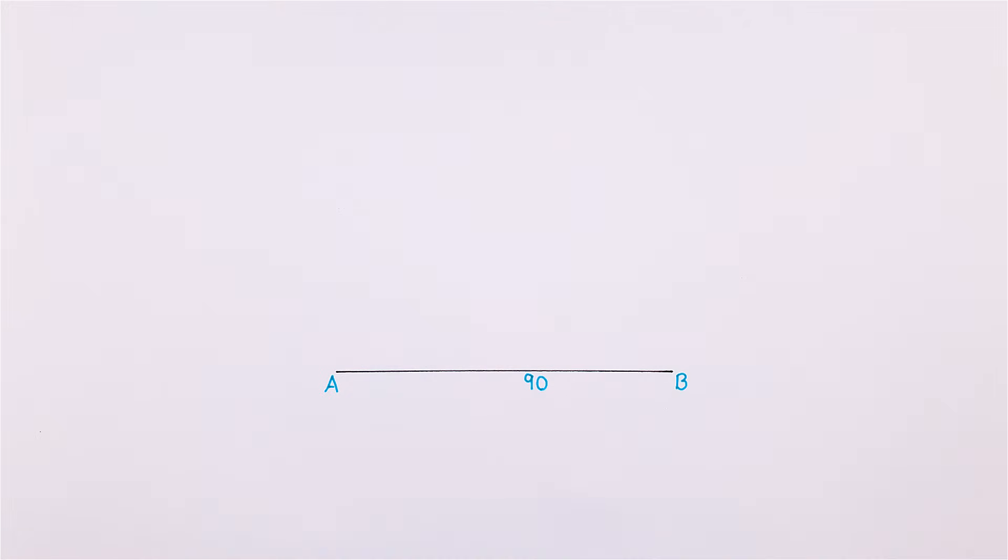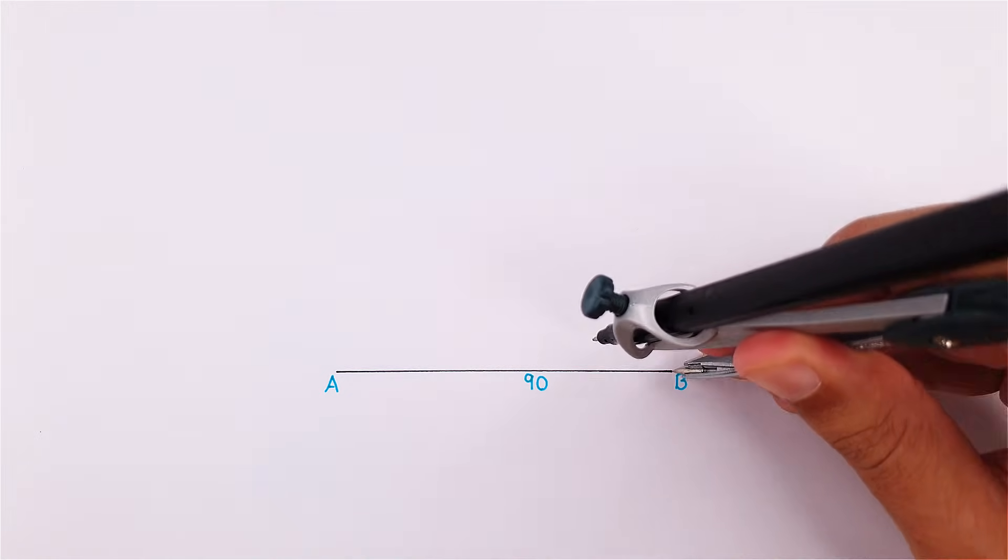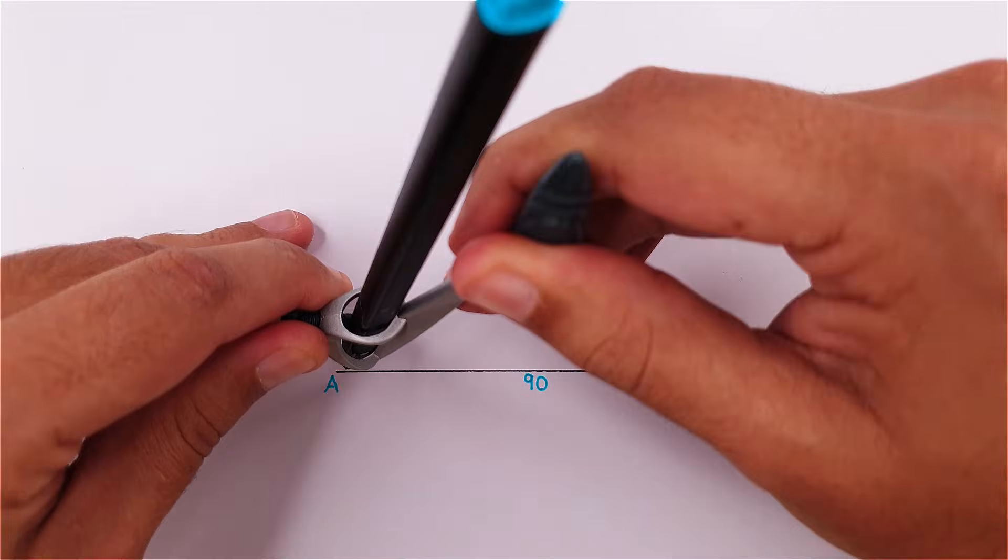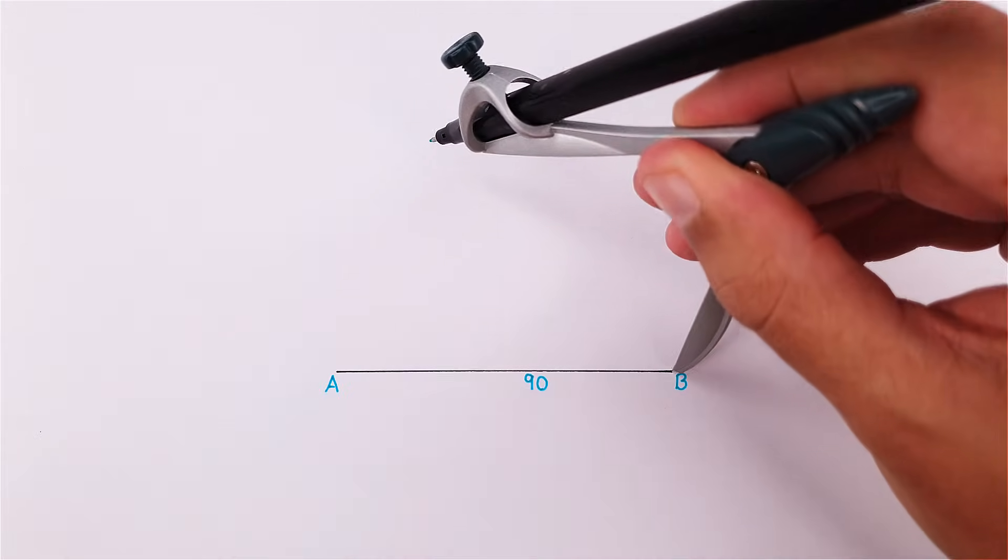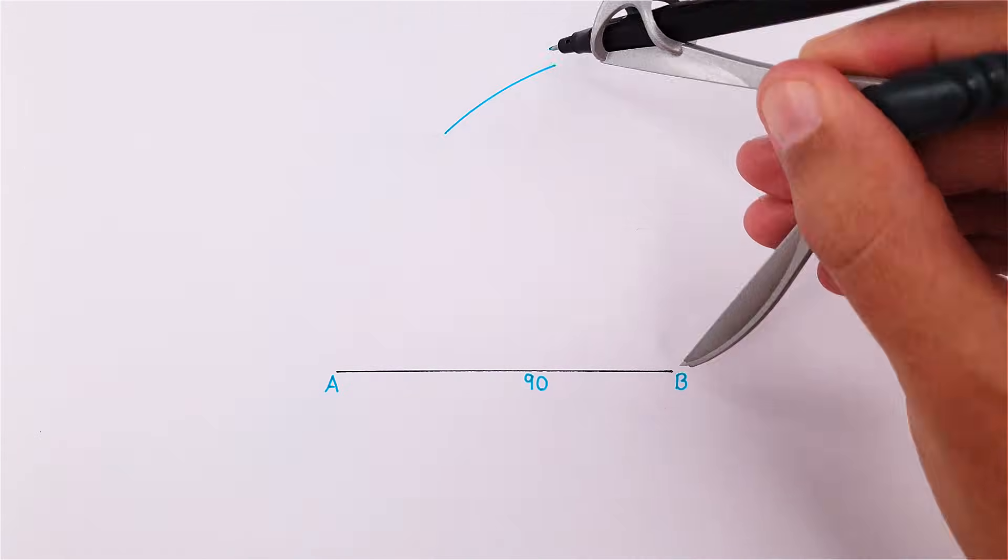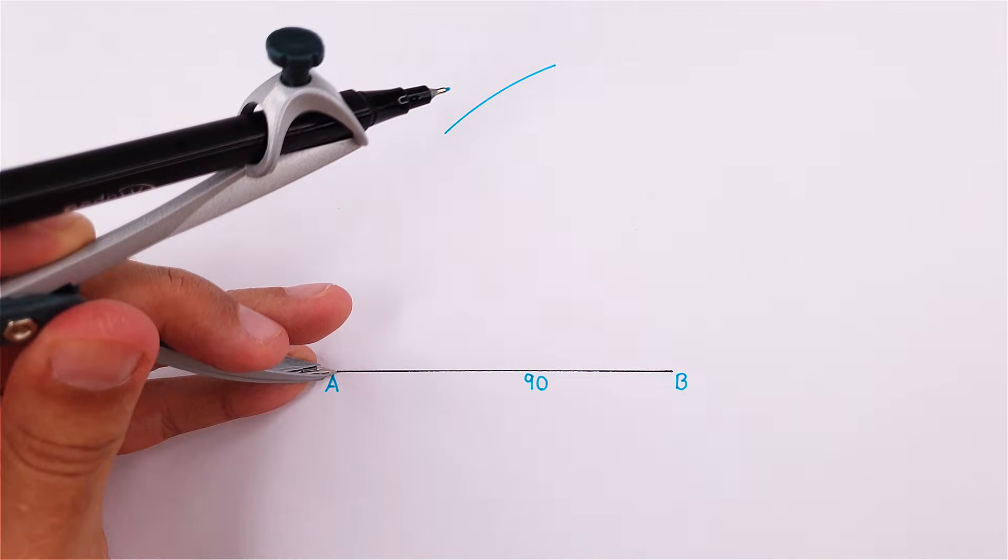We can label our first side as side AB. Using our compass, we will take the full side length and draw two arcs above side AB. We will use this measurement on both ends of our side.